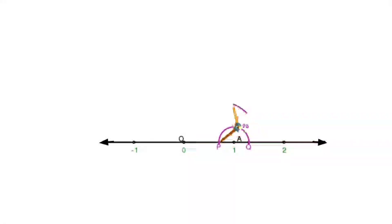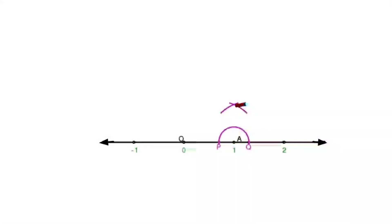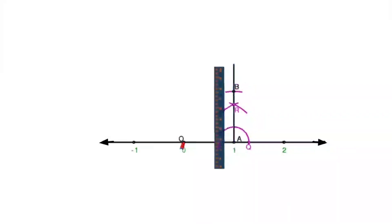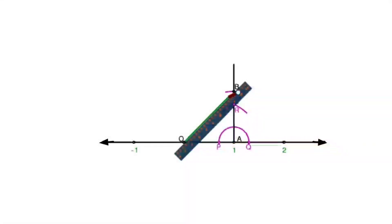With P as center and a radius greater than before, I make an arc, and with the same radius and Q as center I make another arc to intersect the previous arc at point R. If I join A and R, that line will be perpendicular to segment PQ. So I have the perpendicular. Now I need AB to be one unit, so I make an arc of one unit and mark it as point B. I now have point O, point A, and point B. I join O and B to get the right triangle OAB.